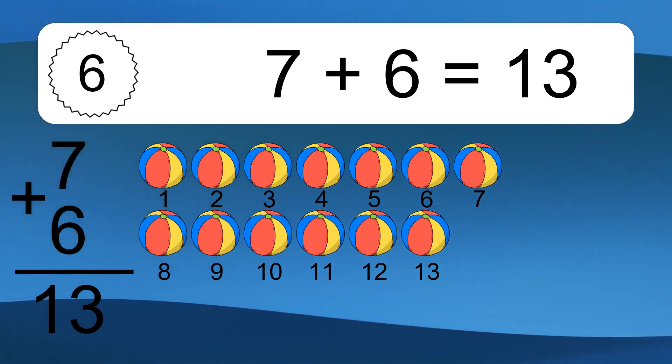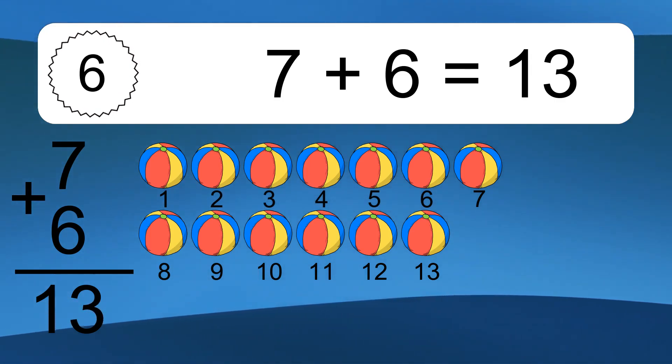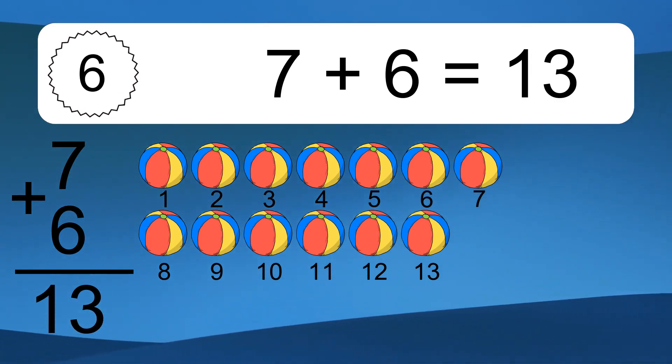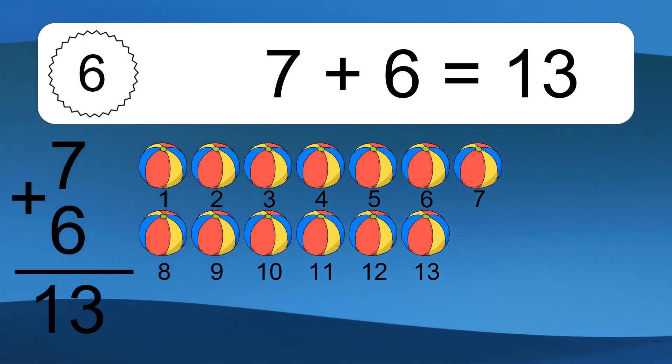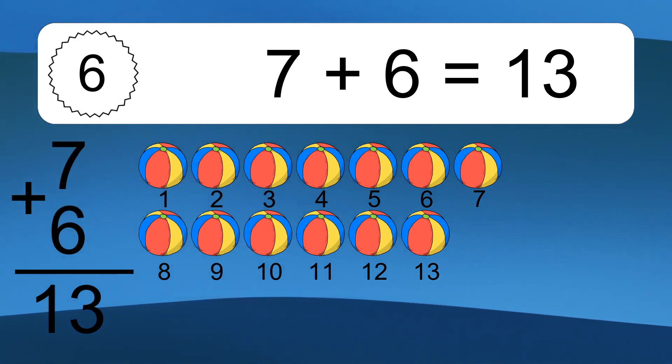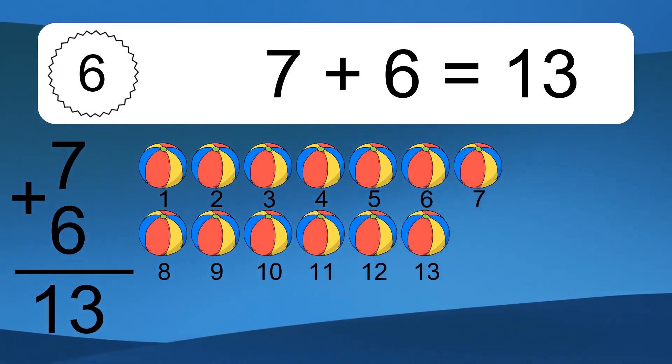7 plus 6 equals 13. Let's count it. 1, 2, 3, 4, 5, 6, 7, 8, 9, 10, 11, 12, 13.